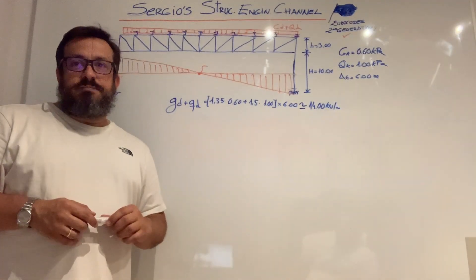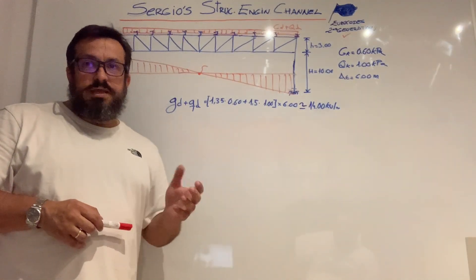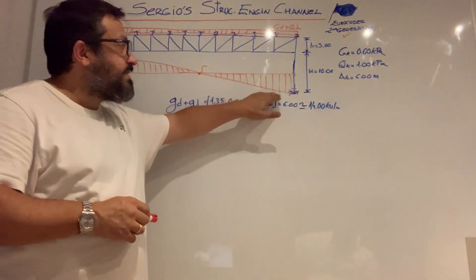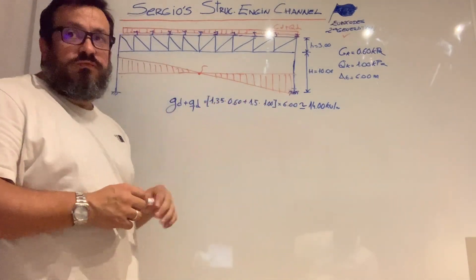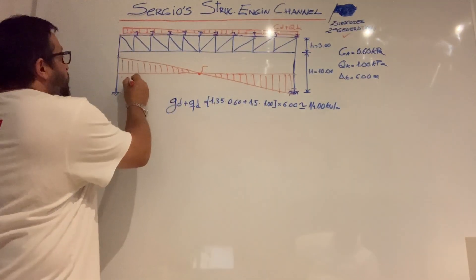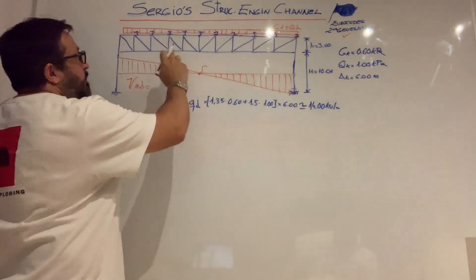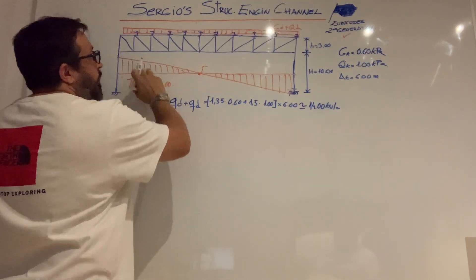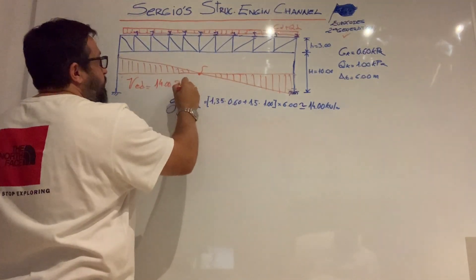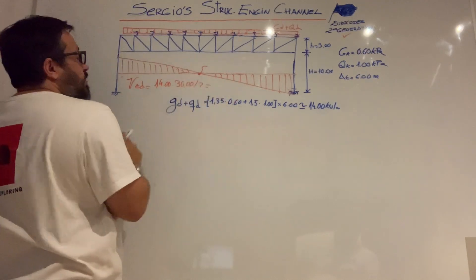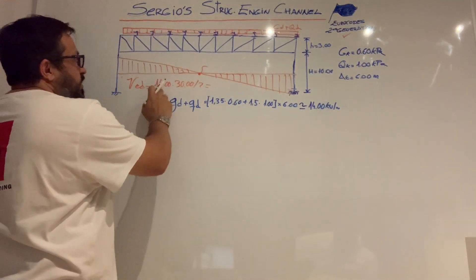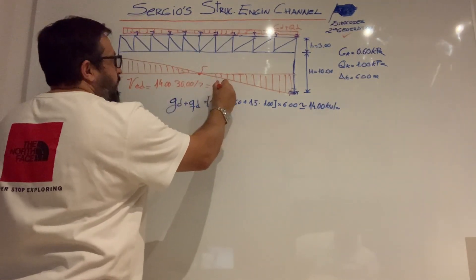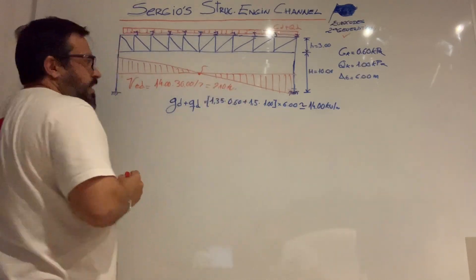After obtaining the bending moment at mid-span, we calculate the shear force, which equals the reaction at the supports. That value is simply the uniform load of 14 kN/m multiplied by the span of 30 meters, divided by 2 for symmetry. This gives a maximum shear force of 210 kN.